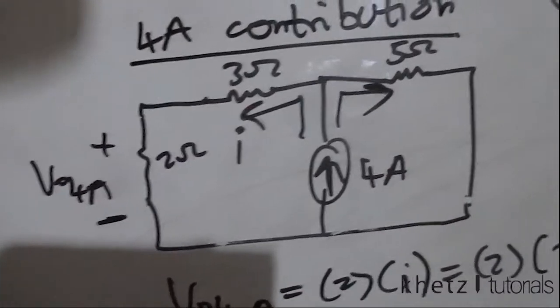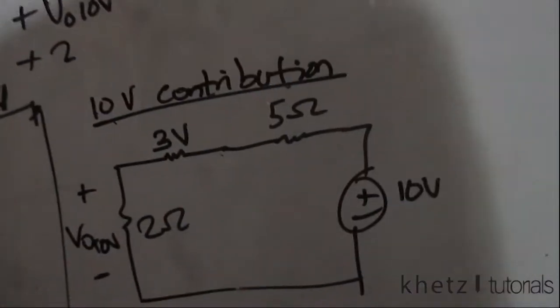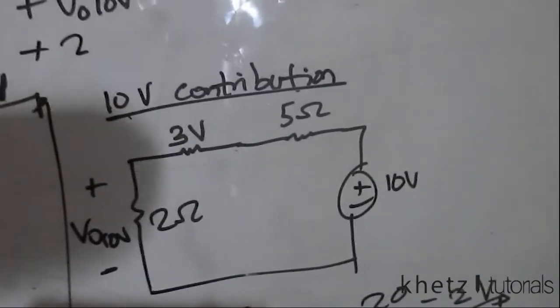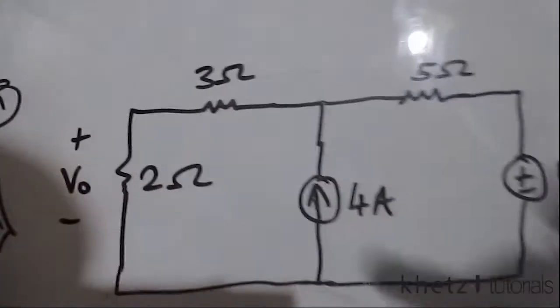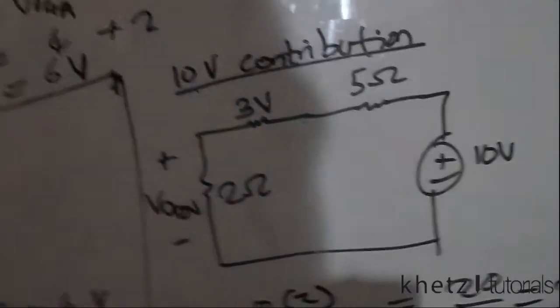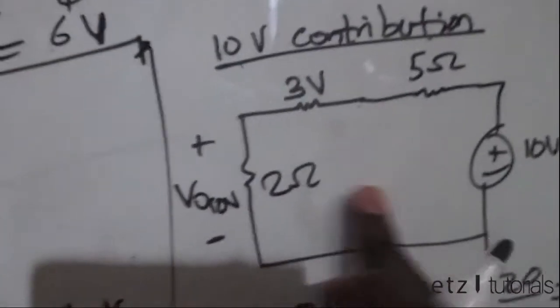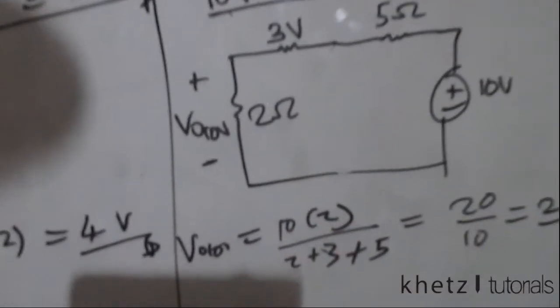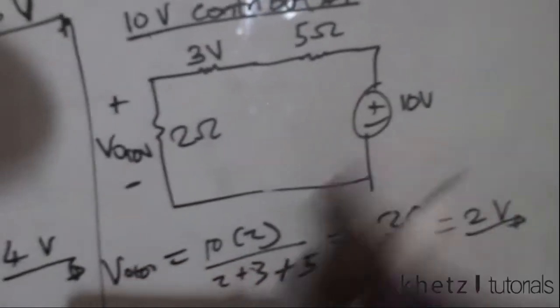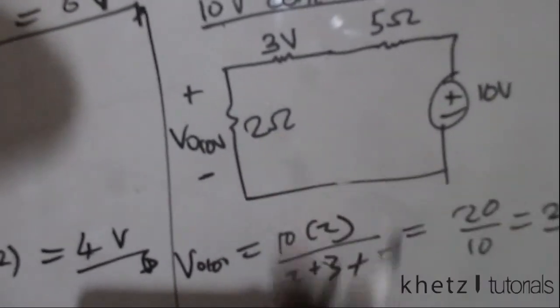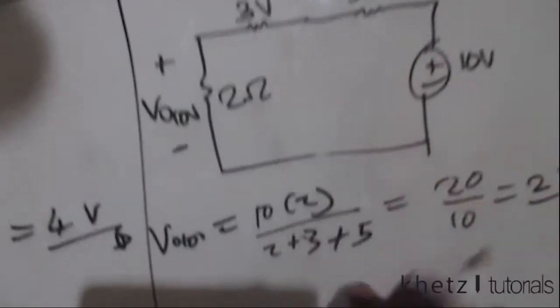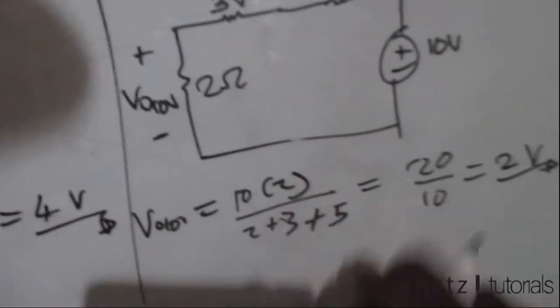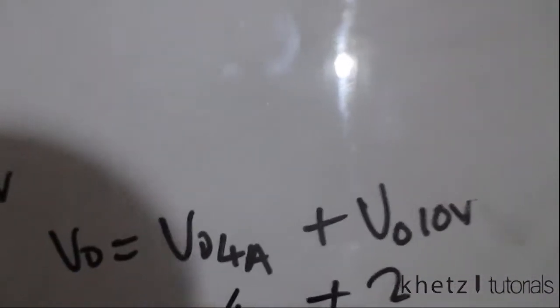Now we find the contribution of the 10-volt source. We remove the 4-ampere current source, which leaves an open circuit, so there is nothing in between. To find Vo across the 2-ohm resistor we perform voltage division: Vo = 10 × 2 / (2 + 3 + 5) = 20 / 10 = 2 volts. That is the contribution of the 10-volt source.